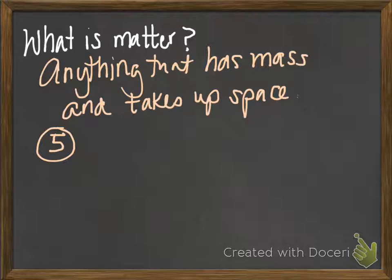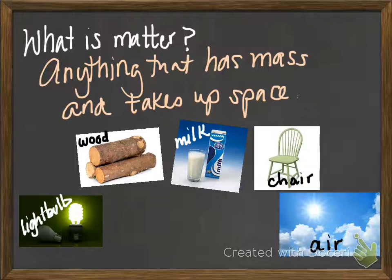Now, I'll give you five — you could have different answers, but these are five examples. You could have said a piece of firewood, milk, the chair you're sitting on, a light bulb, or the air that you're breathing right now. All of those would be good answers for naming five pieces of matter. There are lots of other answers you can have, but these are some examples.